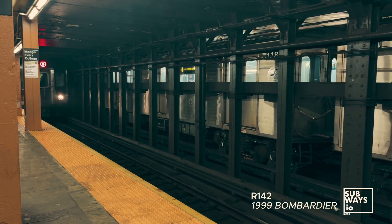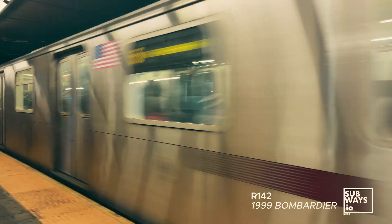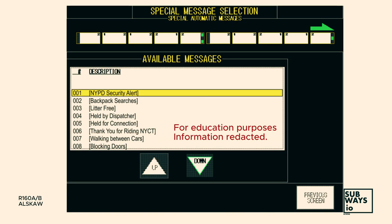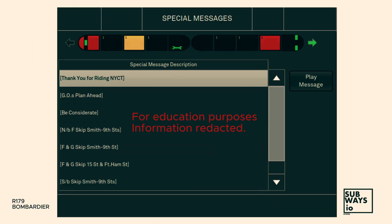In addition to automated messages, the AAS includes special automatic messages — pre-recorded announcements that the crew can manually trigger. For example: 'This train is going out of service,' New York Police Department public safety reminders, or 'This is the last stop.' These are activated from the special messages screen in the train's control interface.